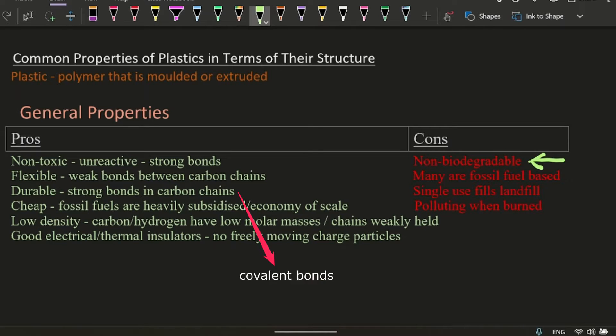They're durable because of the strong bonds within the carbon chains. That's where the strength is. They're cheap. The fossil fuels are heavily subsidized, and they make an enormous amount of these plastics, economy of scale. There's a con about the fossil fuels, and also single use. They're so cheap that people use them once and throw them into a landfill.